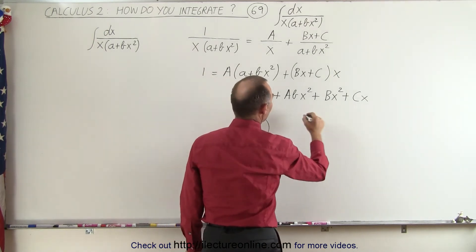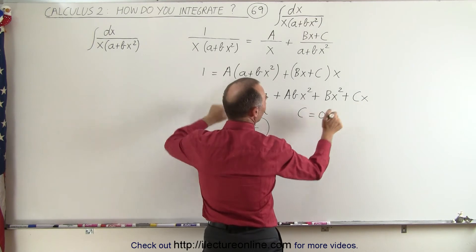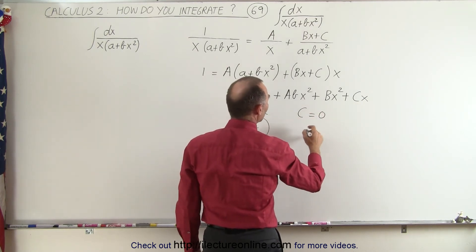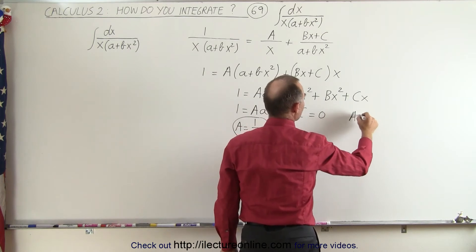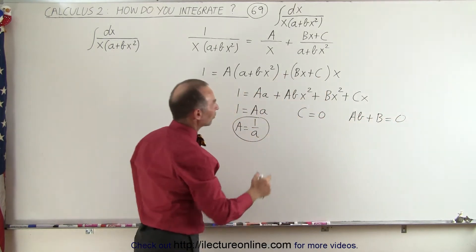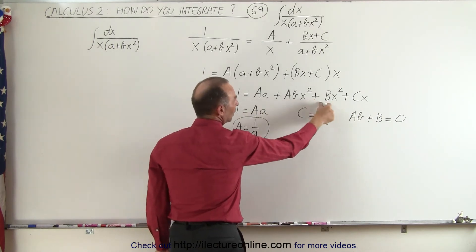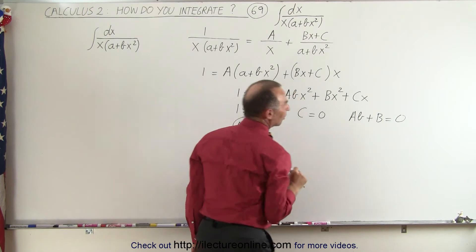And notice that we have cx or c equals 0 because there's no x term on the left side, which means that c must equal 0. And then we can also say that ab plus b must also equal 0 because those are the two coefficients of the x squared terms. There's no x squared term on the left side, so we write ab plus b equals 0.